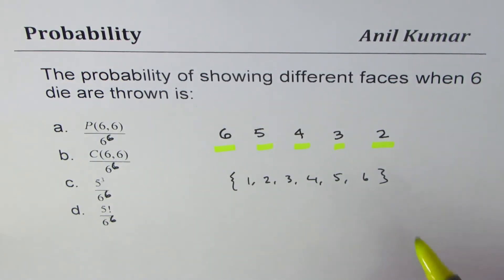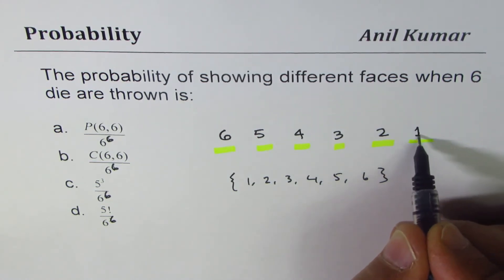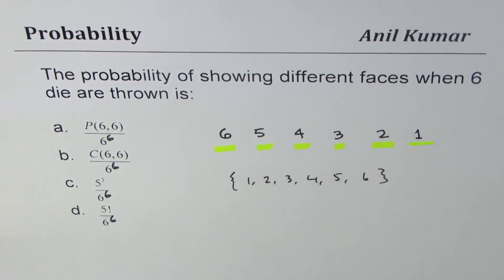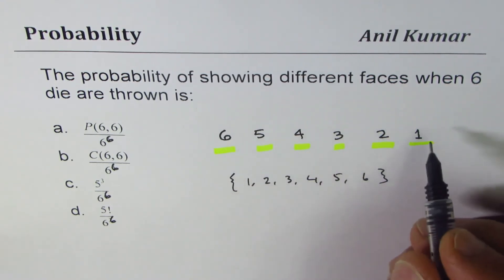And similarly it is three, two. Let me make one more, six. Okay, so these are the total number of options with us which are favorable. So what we get here is six factorial.